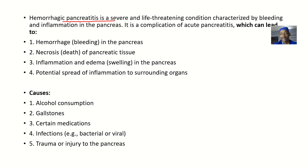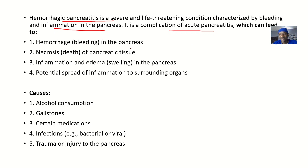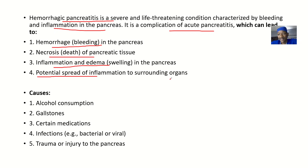Hemorrhagic pancreatitis is actually a severe and life-threatening condition, characterized by bleeding and inflammation in the pancreas. It is a complication of acute pancreatitis, and if you have these complications, it can lead to several things: there could be hemorrhage — that's bleeding in the pancreas; there could be necrosis — that's the death of pancreatic tissues; there will be inflammation and edema, that's swelling in the pancreas; and there'll be potential spread of inflammation to surrounding organs in the body.